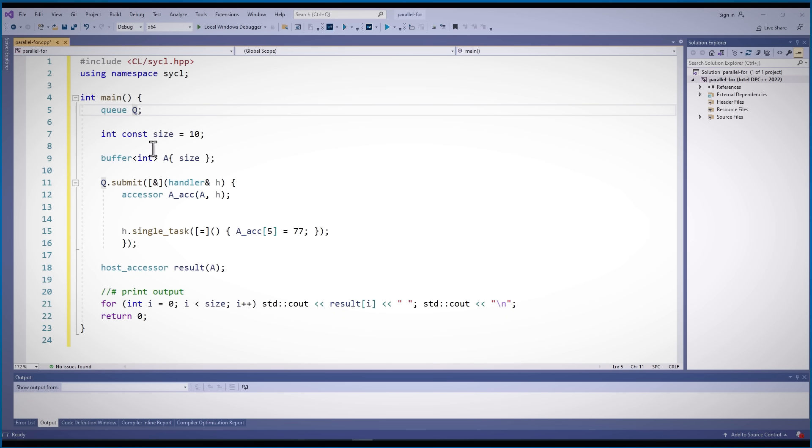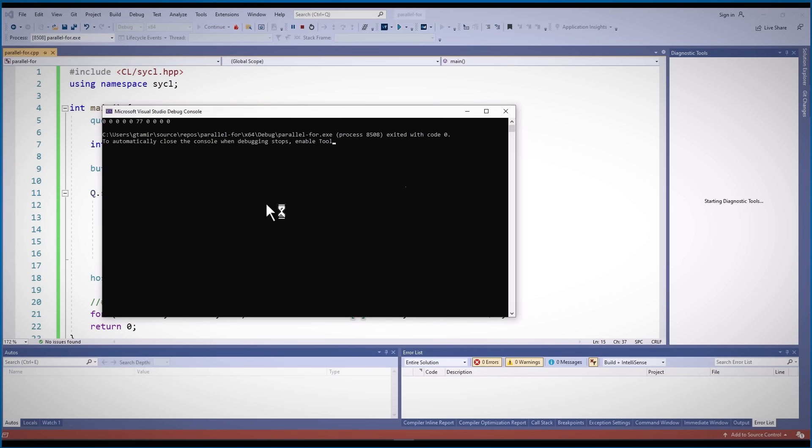I have a queue, I have a buffer, and an accessor to that buffer. And I am running a simple task, just update the array entry 5 to 7. And let's run it. And it is working.